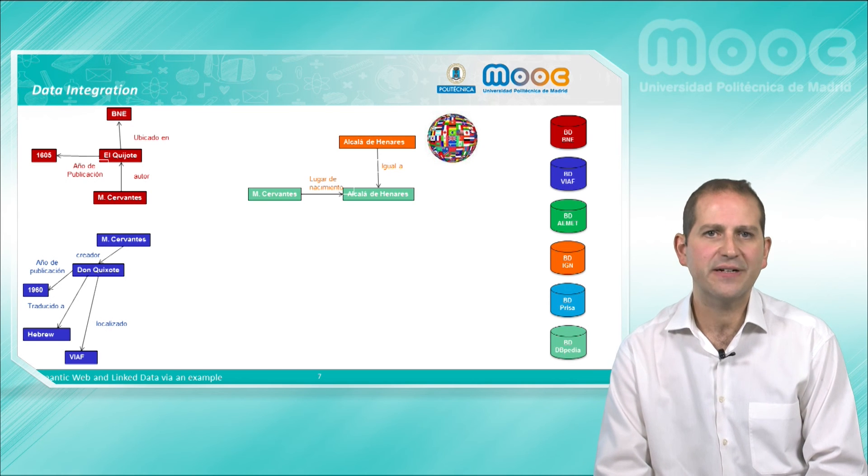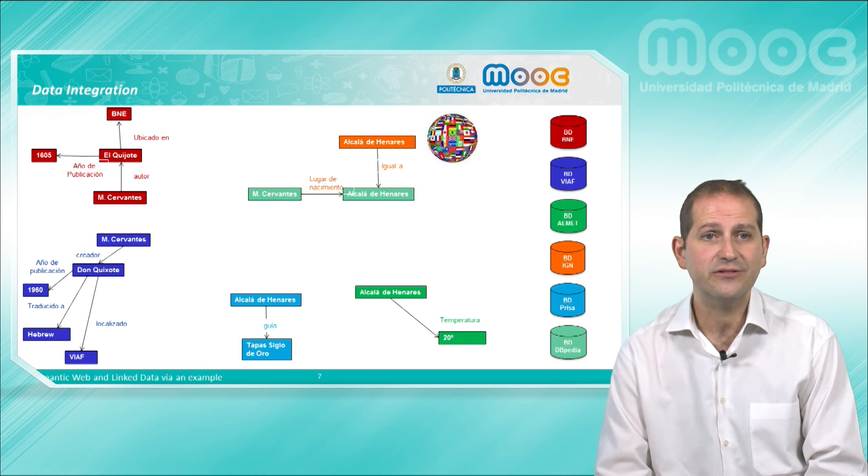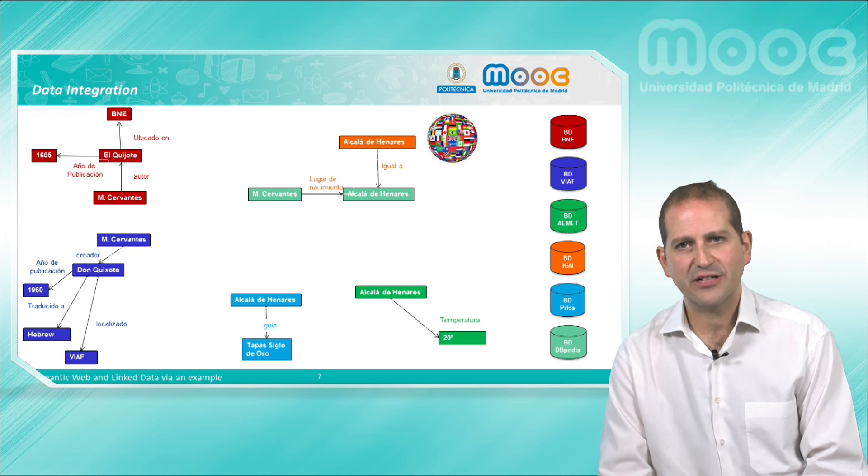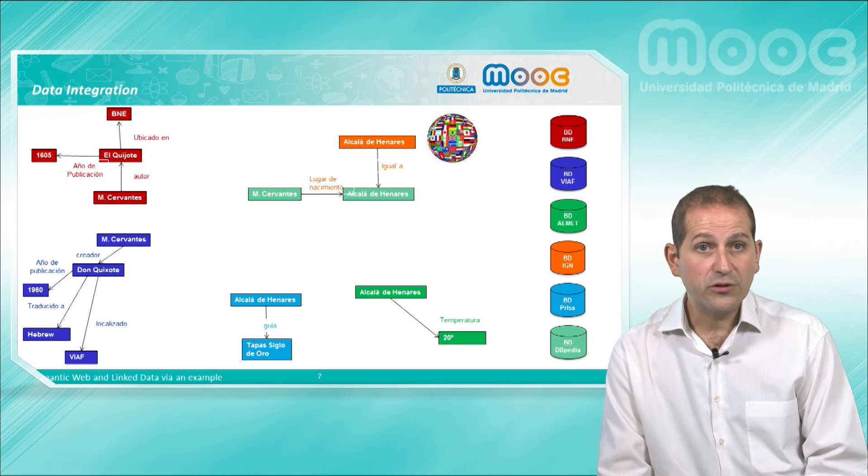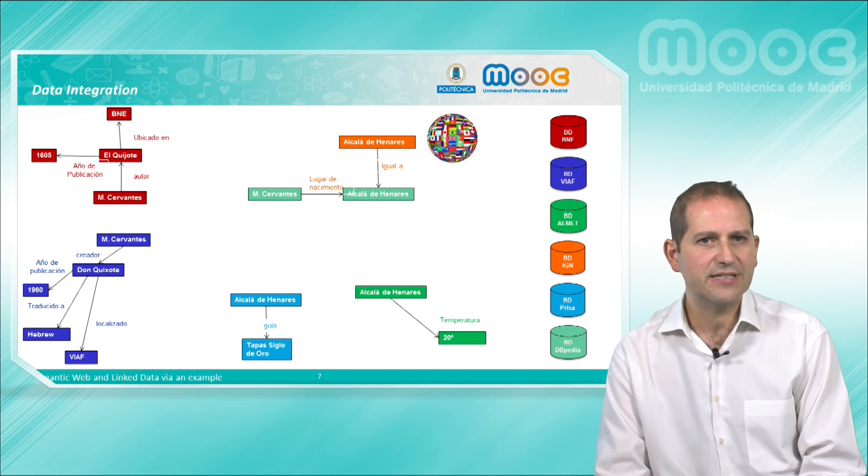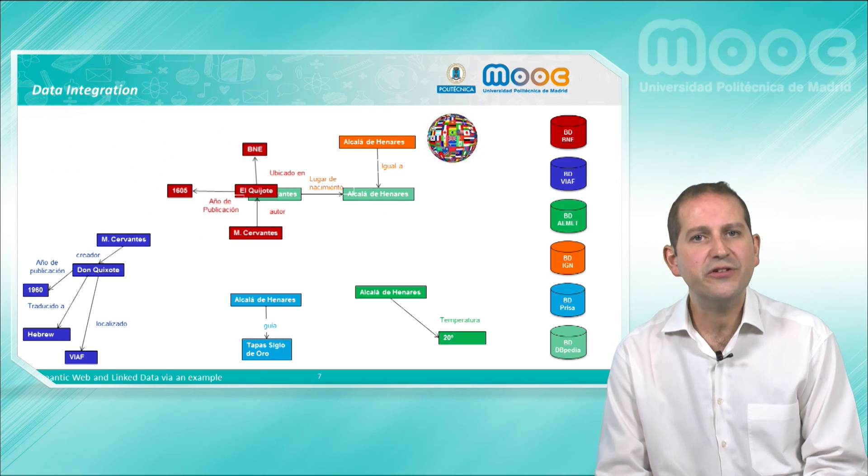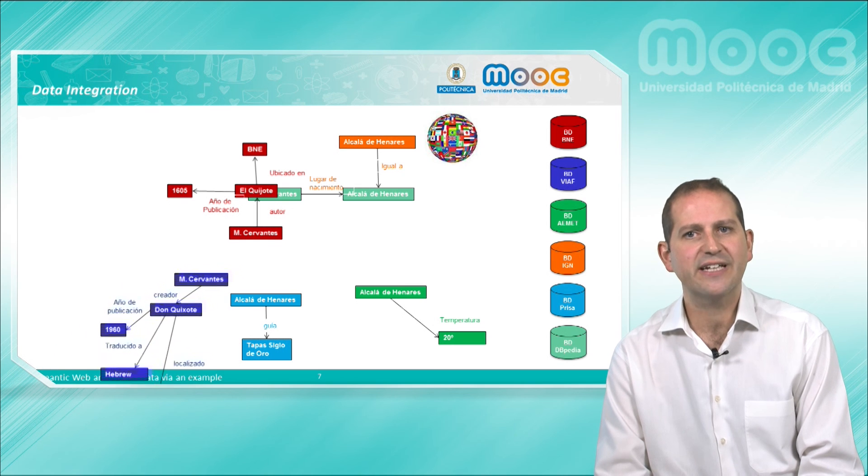This is what we see as a summary here, where we see not only how different data sources from different data providers—the Spanish National Library, BNF, the Spanish Met Office, the National Geographic Institute, etc.—can be made available following the graph structure of RDF, but also how some of these resources that are duplicated in many of these databases, for example Cervantes or Alcalá de Henares, can be fused together by declaring that they refer to the same real entity. This will be the key for performing a proper data integration of such heterogeneous data sources.